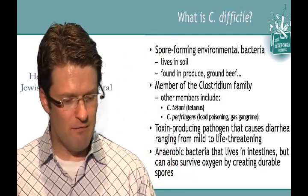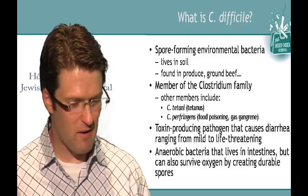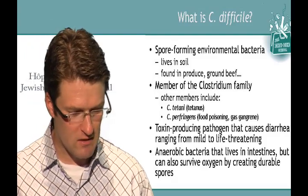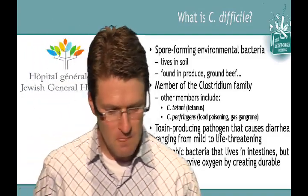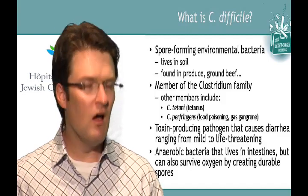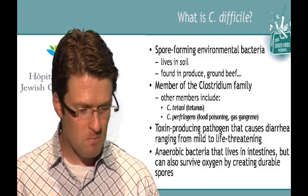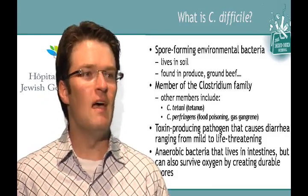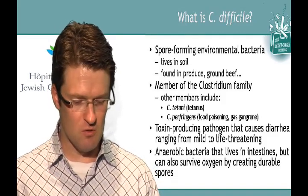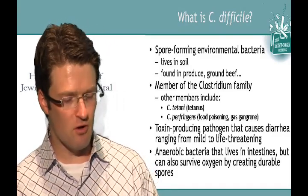Members of the clostridium family include some fairly notorious members, including C. tetani, the cause of tetanus, and Clostridium perfringens, the cause of food poisoning and gas gangrene. So this is a pretty nasty family to be part of. C. diff is a toxin-producing pathogen that causes diarrhea ranging from mild diarrhea all the way up to life-threatening colitis requiring emergent surgery, intensive care stays, and can sometimes cause death. It's an anaerobic bacteria — it doesn't tolerate oxygen very well. The environment in your intestines is actually quite low in oxygen, which lets it survive there. However, C. diff can also survive oxygen by creating durable things called spores.